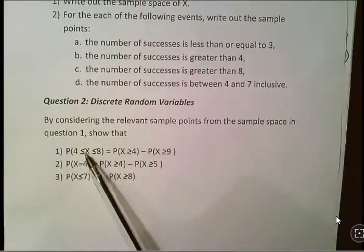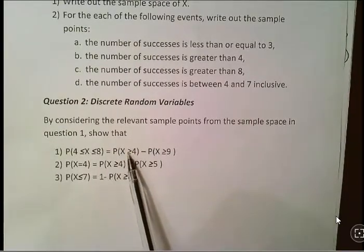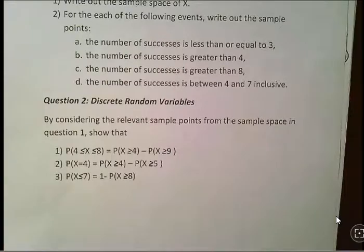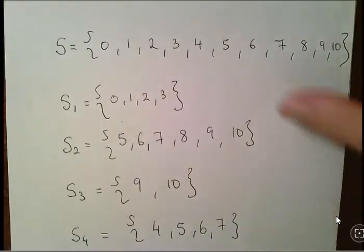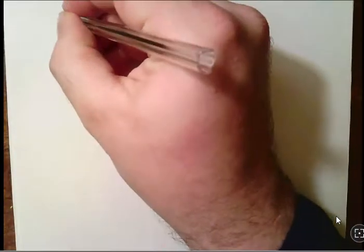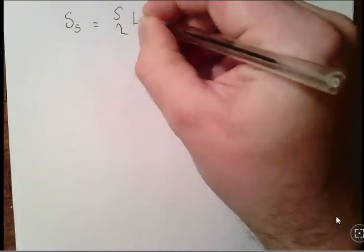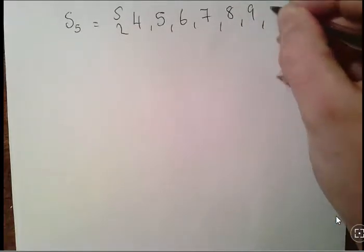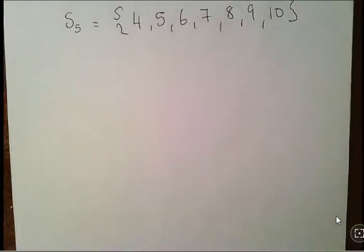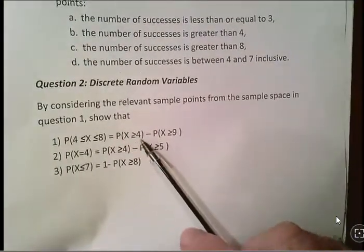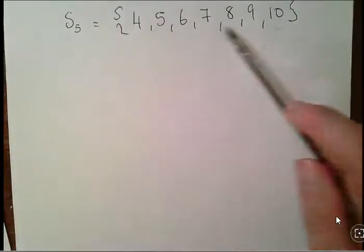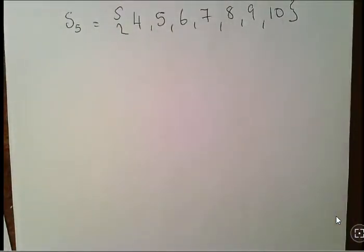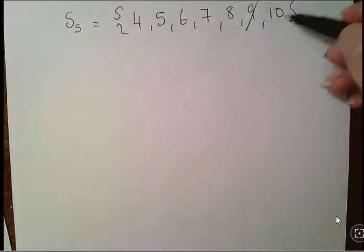By considering the relevant sample points from the sample space, show that the probability of X being between 4 and 8 equals the probability of X greater than or equal to 4 minus the probability of X greater than or equal to 9. Let's start that one up here. I'll just go to a new page. Let's look at the sample points. I'll call this S5: 4, 5, 6, 7, 8, 9, and 10. What we have there right now is probability of X greater than or equal to 4, and it's the combined probability of all of those events there.